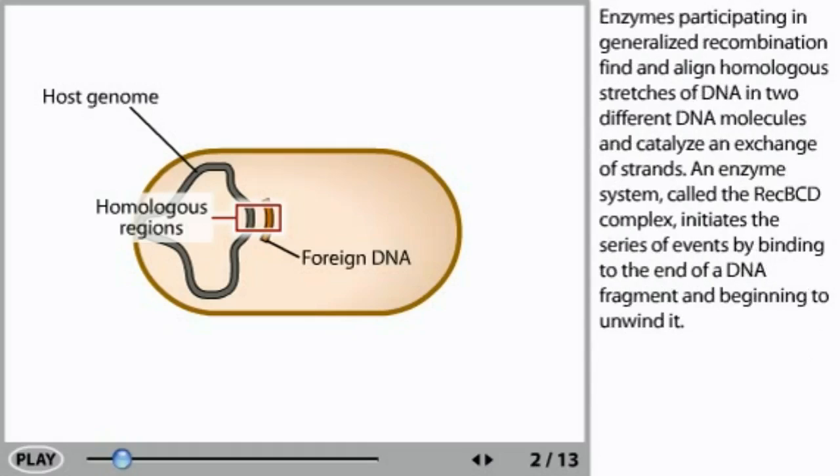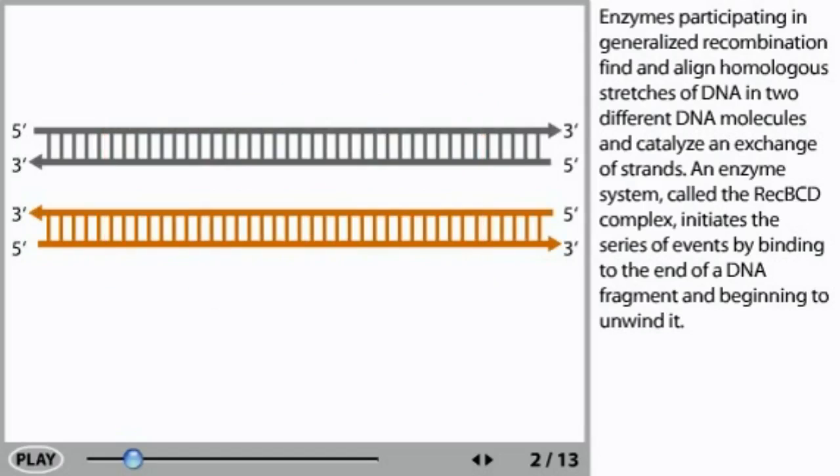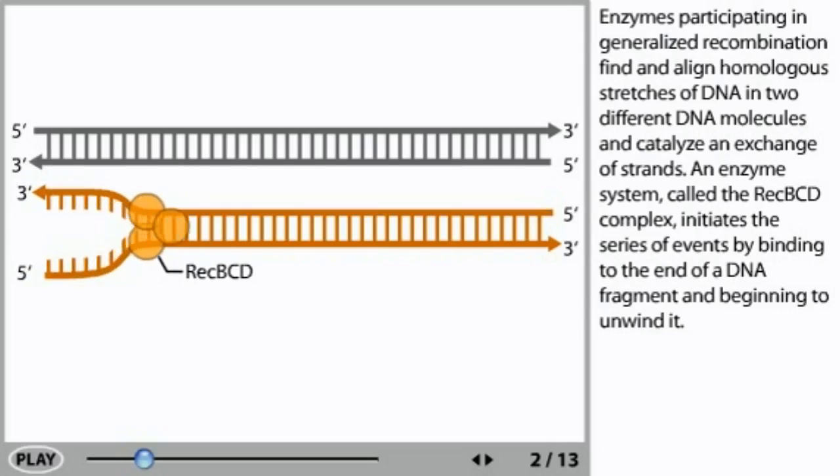Enzymes participating in generalized recombination find and align homologous stretches of DNA in two different DNA molecules and catalyze an exchange of strands. An enzyme system called the RecBCD complex initiates the series of events by binding to the end of a DNA fragment and beginning to unwind it.